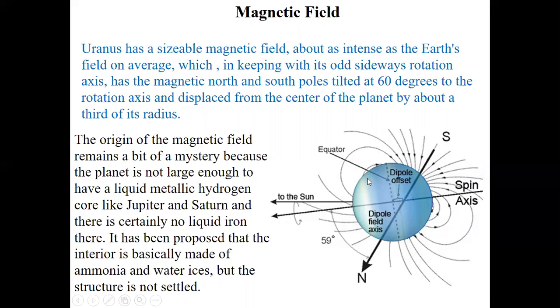The origin of the magnetic field remains a bit of a mystery because this planet is not large enough to have liquid metallic hydrogen. Remember like Jupiter and Saturn had liquid iron. If you remember about the magnetic field, planets get their magnetic field because of the presence of liquid metallic iron. Liquid metallic hydrogen can make the magnetic field. For Uranus, it's a little bit mystery how does this planet get the magnetic field, because the planet is not large enough to have a liquid metallic hydrogen core like Jupiter and Saturn.